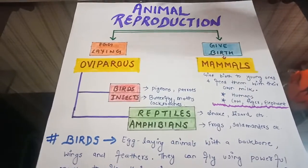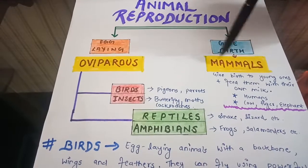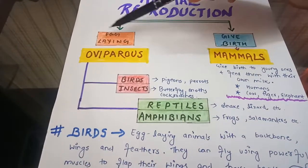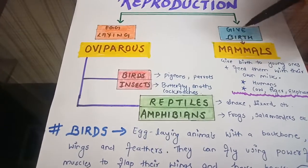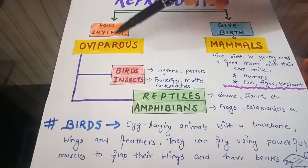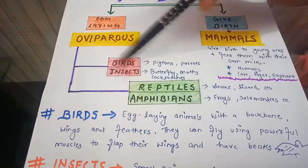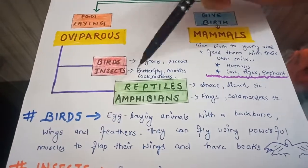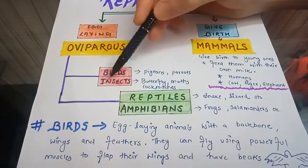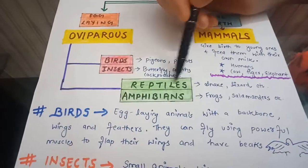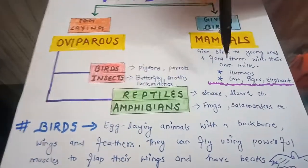We have two categories in animal reproduction: egg-laying animals, also known as oviparous, and mammals, also known as viviparous. In the oviparous section, we have different categories: first, birds; second, insects; third, reptiles; and fourth, amphibians.